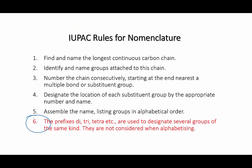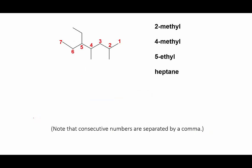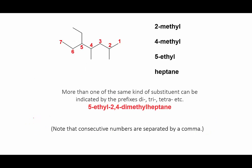Remember if you have two or more of the same kind of group, we can use di or tri or tetra, depending on how many there are, to indicate this. So the proper name for this molecule is 5-ethyl-2,4-dimethylheptane.